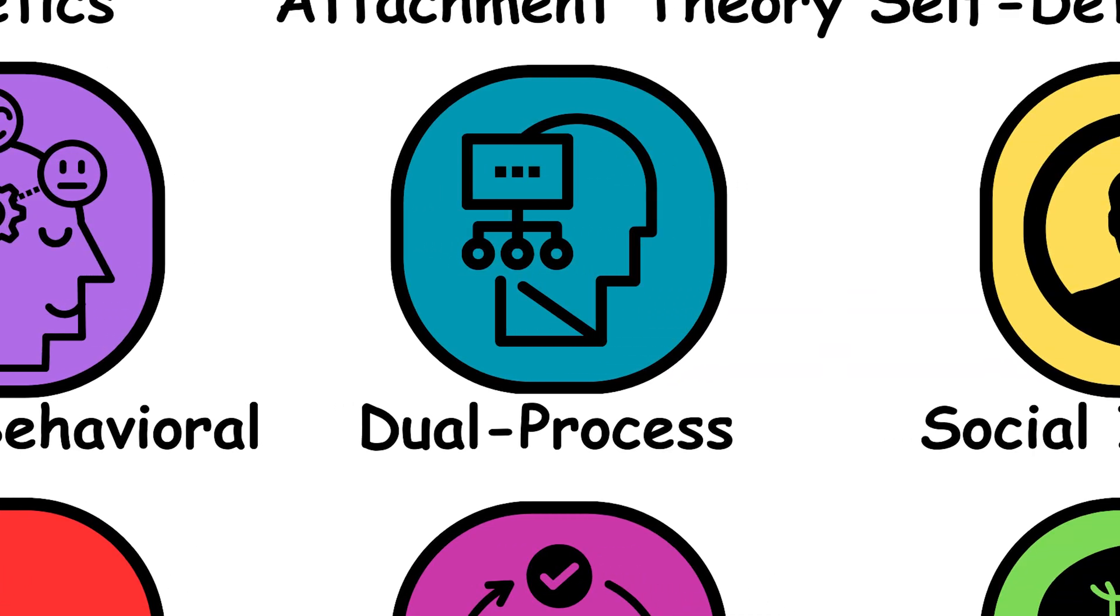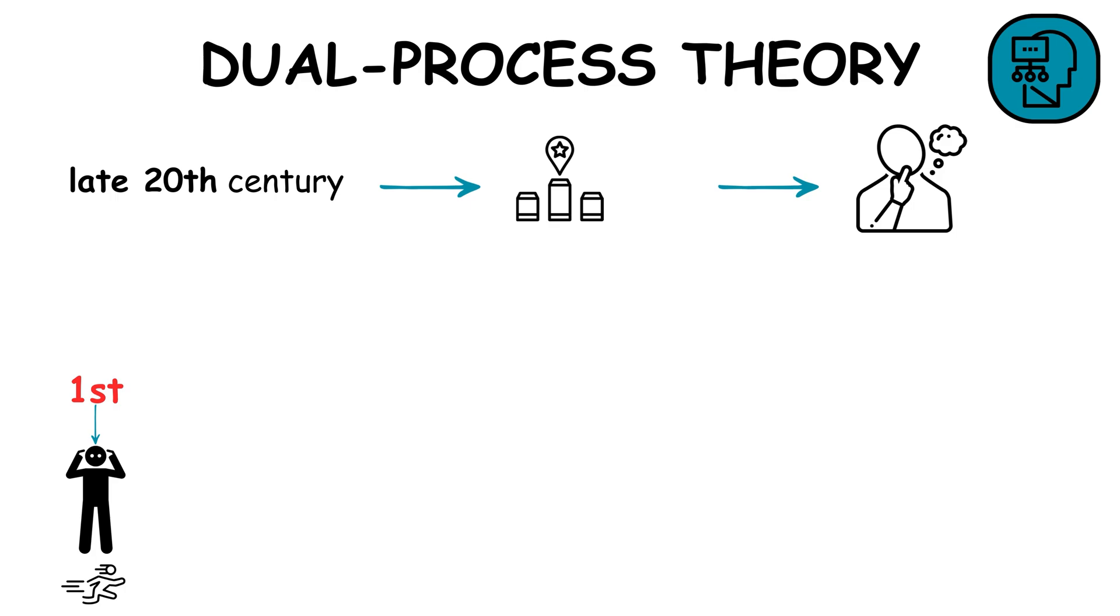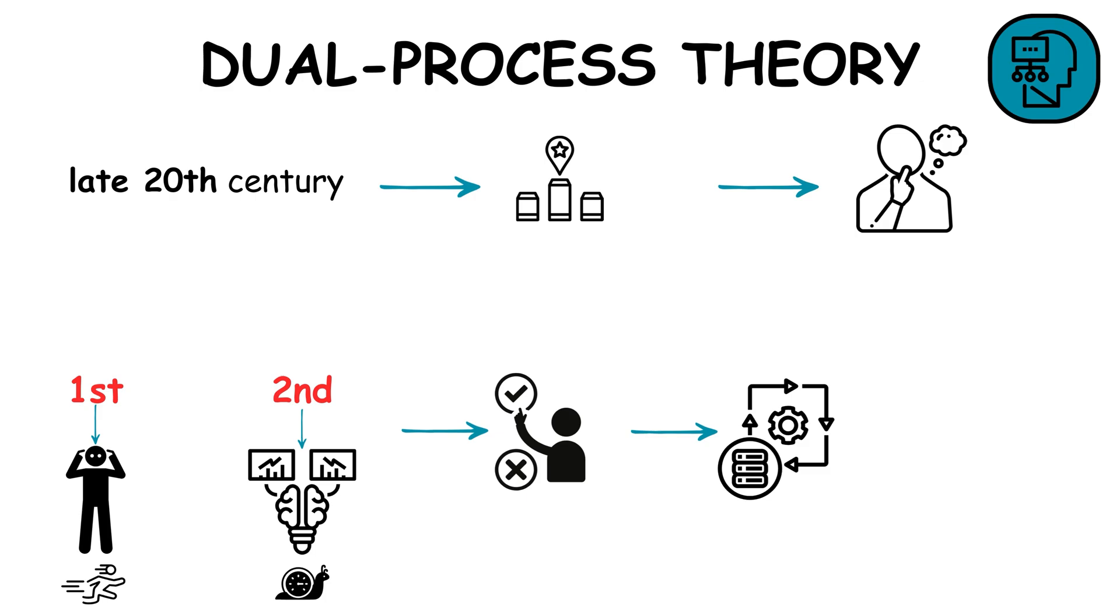Dual Process Theory, gaining recognition in the late 20th century, posits that human thought arises from two different systems, one intuitive and fast, the other analytical and slow. This theory explains how we make decisions, process information, and form judgments.